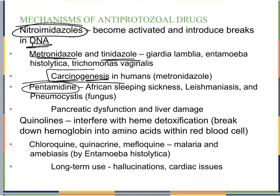Pentamidine is used for African sleeping sickness, leishmaniasis, and Pneumocystis, which is a fungus. It can cause pancreatic dysfunction and liver damage. When discussing these drugs, we see many more side effects because our cells are so closely aligned with these eukaryotic pathogen cells — they're very similar.